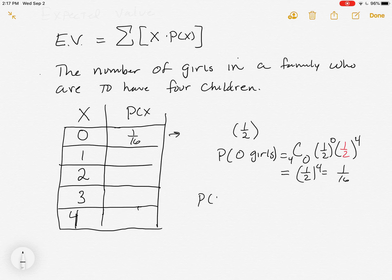Probability of one girl. That's C of 4, 1. One half to the one. One half to the third. C of 4, 1 is four. So this is four. And then we're going to get the same one sixteenth out. Notice we have four one halves being multiplied together. So that's one fourth.